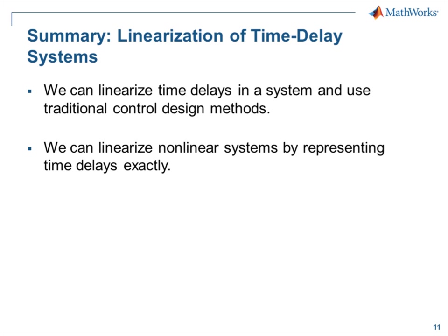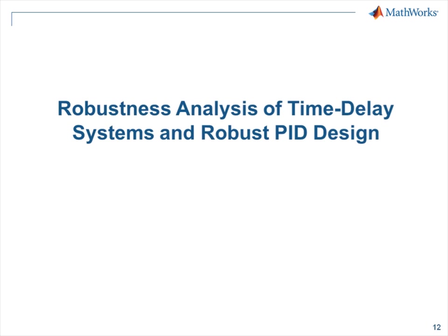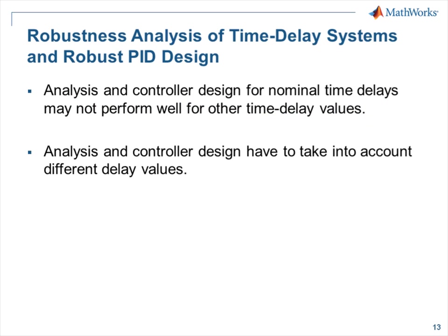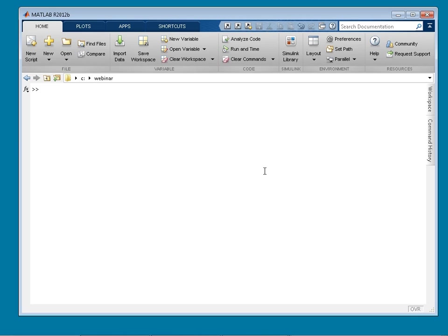In this section, we talked about linearization of time delay systems. We showed that we can linearize time delays in a system and use traditional control design methods, and we showed that we can linearize nonlinear systems by representing time delays exactly. Now let's focus on robustness analysis of time delay systems and robust PID design. Analysis and controller design for nominal time delays may not perform well for other time delay values, since in practice parameters may vary within certain bounds. Previously, we linearized the plant at three time delay values and exported to the workspace as Linsys 1, 2, and 3.